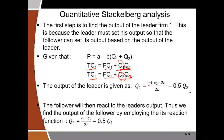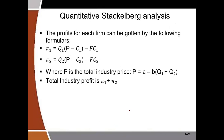The formula for the leader's output is: Q1 = (A + C2 − 2C1) / 2B. Firm 2's reaction function is the same as in Cournot: Q2 = (A − C2) / 2B − 0.5·Q1. The profit functions are also the same: profit for firm 1 = Q1·(P − AVC1) − FC1, and profit for firm 2 = Q2·(P − AVC2) − FC2. Once we find individual profits, we add them to get total industry profit.